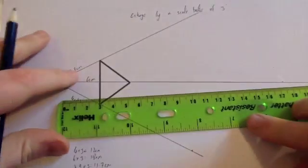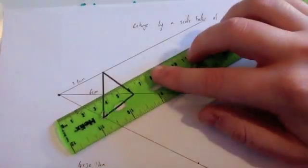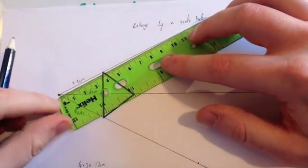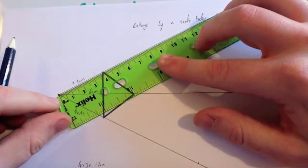This one was 3.9, we timesed it by 3, and we got 11.7. Again, we put our zero on the center of enlargement, line up the line, and we go to exactly 11.7 centimeters.